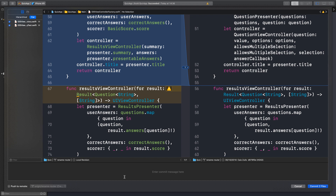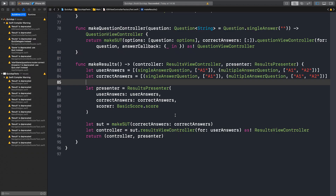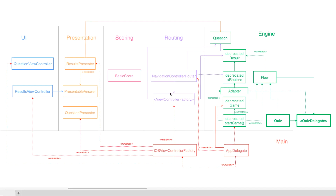Perfect timing — commit done. We introduced the new factory API to create result view controllers. Let's have a quick look at our diagram — the view controller factory is the one that injects the basic score into the presenter. The presenter doesn't have a reference to the basic score. Interesting — let's talk about it in the next episode. See ya, bye!